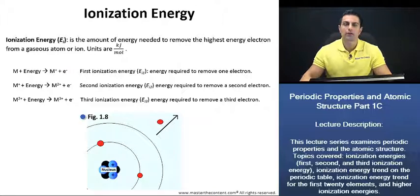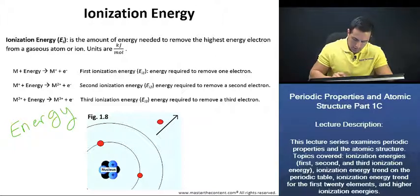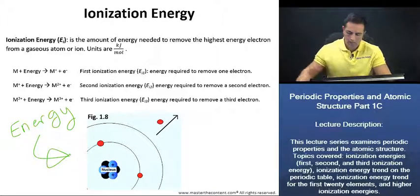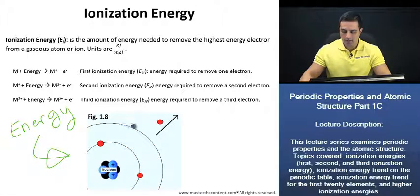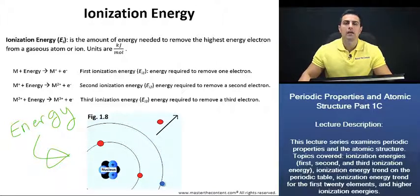Let's begin by taking a look at figure 1.8. Now, if we add energy to an atom, as you see here, then we can make an electron jump to a higher energy level. If that electron gains enough energy, it can actually be removed from the atom. And once that electron is removed from the atom, we're left with an ion, because it has lost an electron.